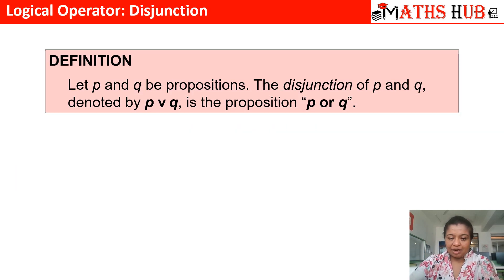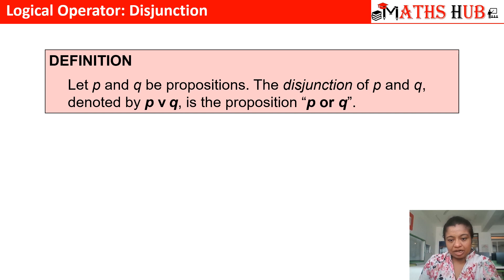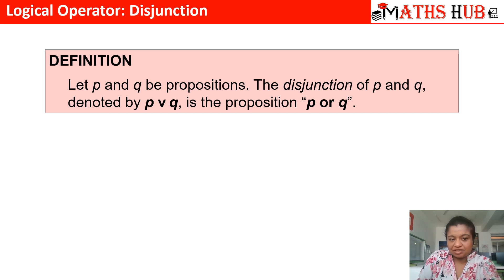The definition of the disjunction operator is that P and Q are two propositions. The disjunction of P and Q is represented by the symbol P or Q, and the meaning is 'P or Q'. The disjunction symbol is the wedge symbol, and the English meaning is 'or'.